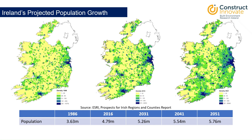We can see maps produced by the ESRI for Ireland in terms of population growth. The map on the left is from 1986, when the population was 3.63 million — the darker the dots, the more densely populated the area. You can see Dublin in the east, Cork in the south, Limerick in the midwest, and Galway in the west. The middle map is from the 2016 census, showing the population increased to 4.79 million over 30 years. We can see that Dublin and its suburbs grew significantly, and commuter belts are visible around the cities.